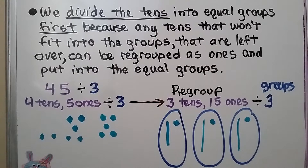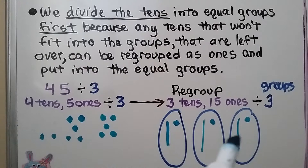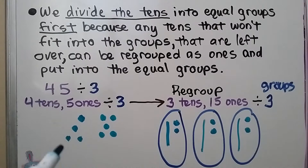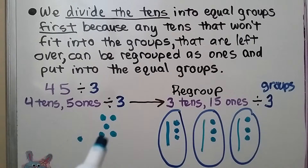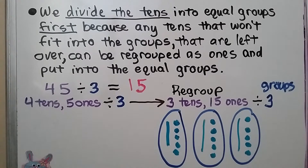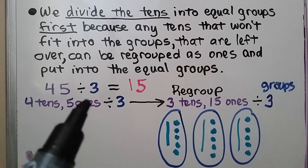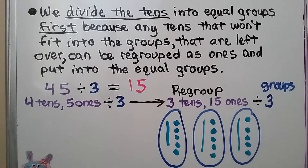We put the 15 ones equally into the three groups, three at a time — three, then three more, then three more, and finally one into each group. We have 15 in each group, so 45 divided by 3 equals 15.